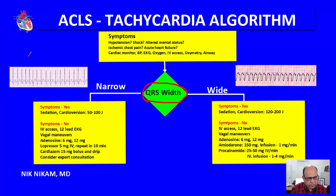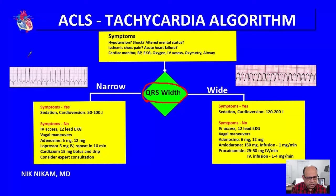For narrow QRS complex tachycardia, the most frequent conditions we see are atrial flutter with rapid ventricular response, paroxysmal atrial tachycardia, or atrial fibrillation with rapid ventricular response.